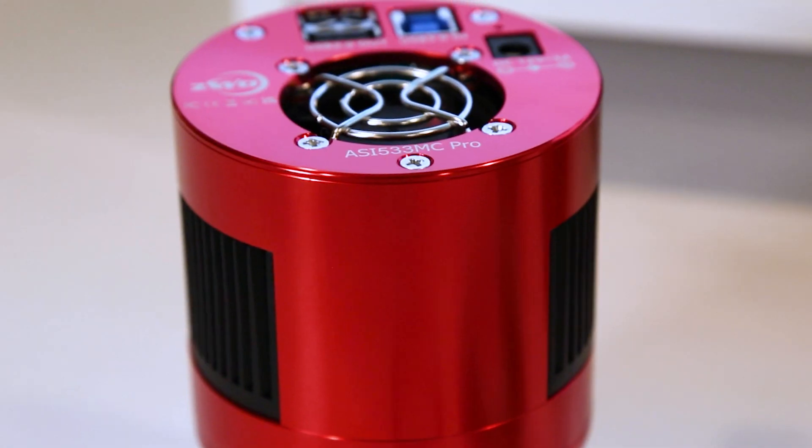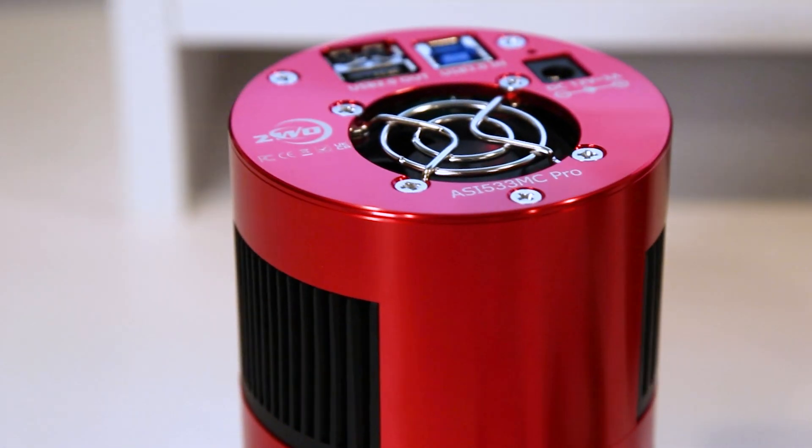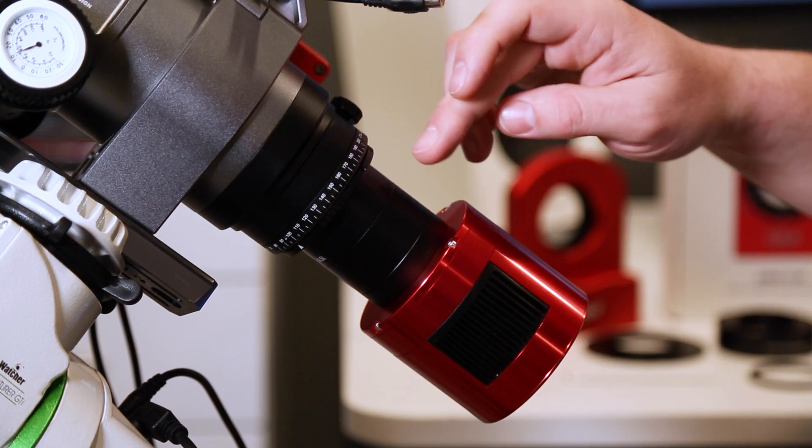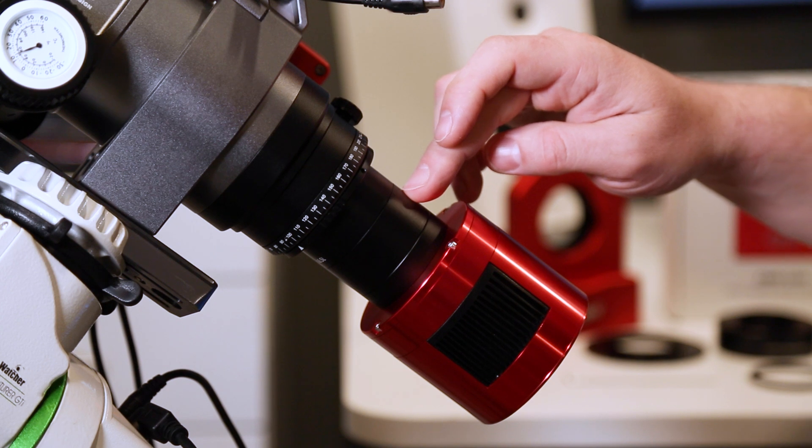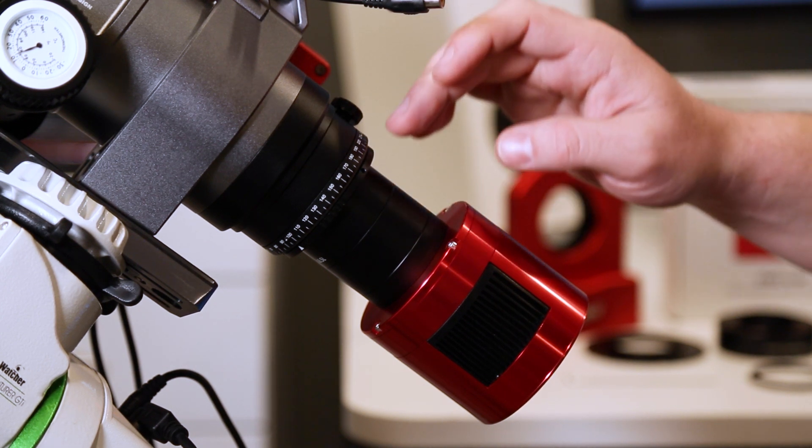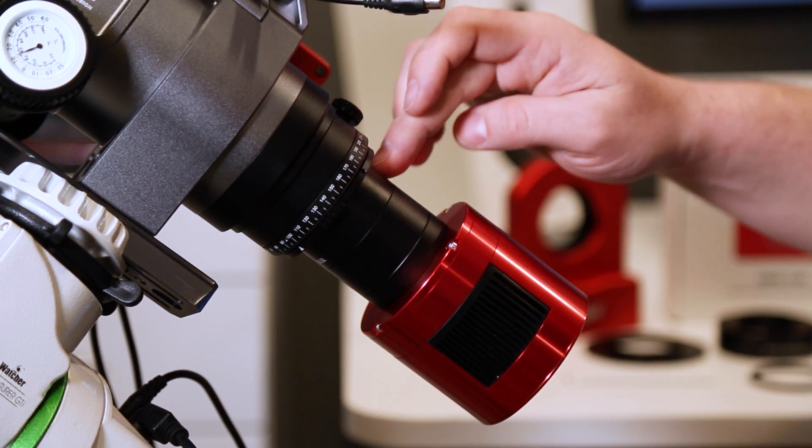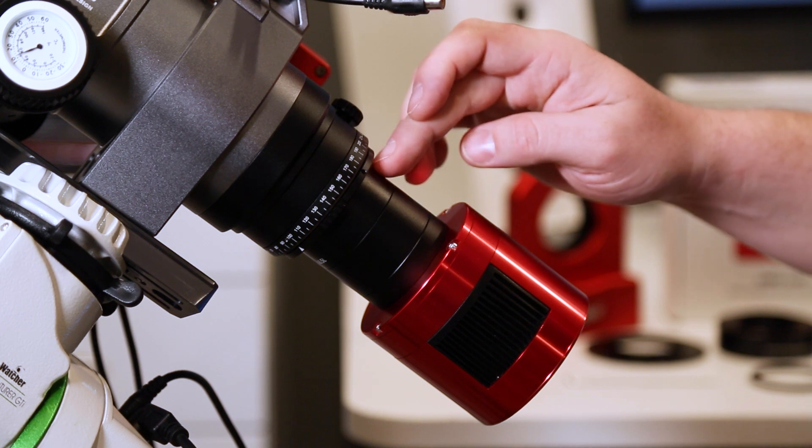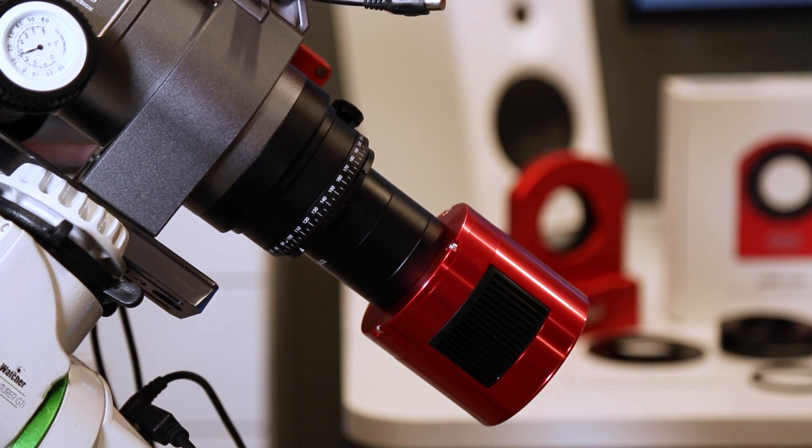I'm using the ASI 533 MC Pro here, which has a 16.5 millimeter adapter and a 21 millimeter length adapter. So theoretically, I should be able to just remove the 16.5 millimeter adapter and replace it with the CAA.